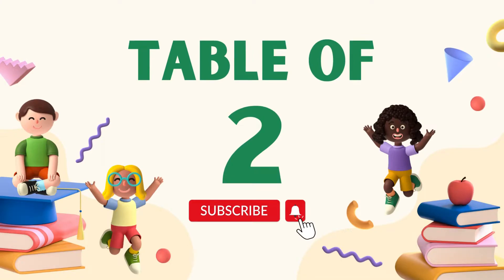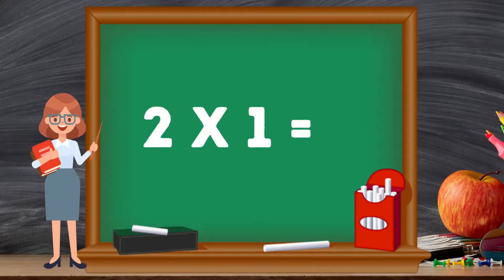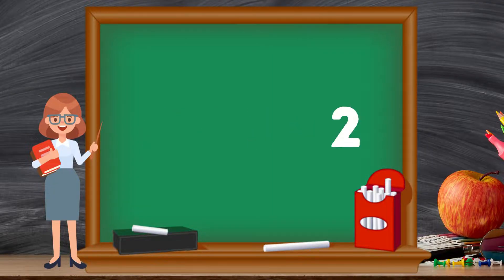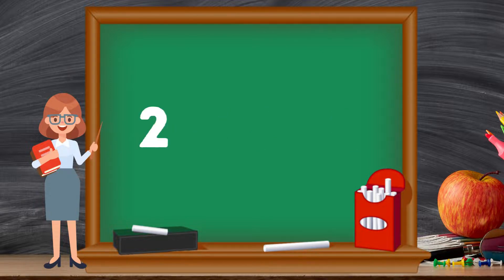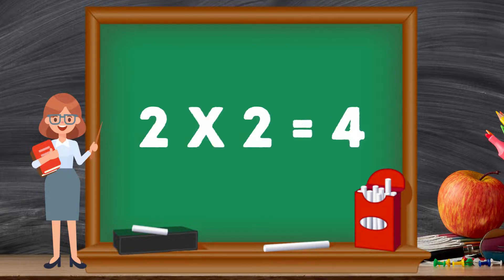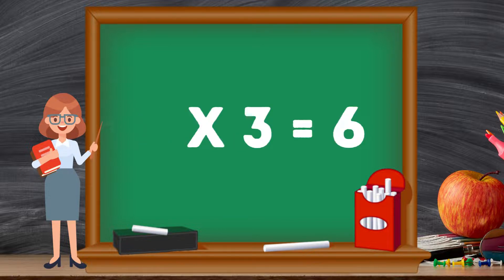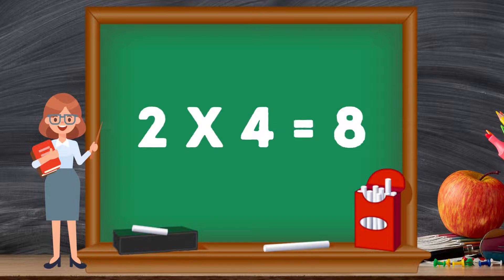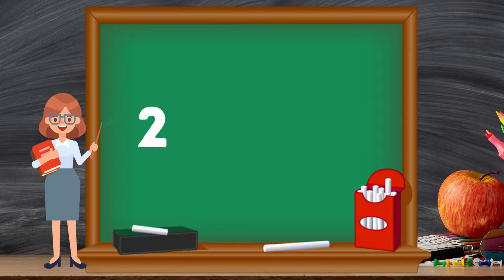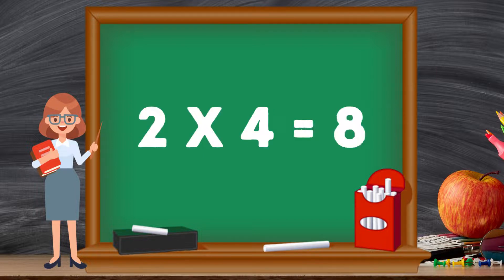Let's revise. Two ones are two, two ones are two. Two twos are four, two twos are four. Two threes are six, two threes are six. Two fours are eight, two fours are eight.